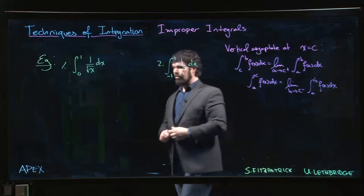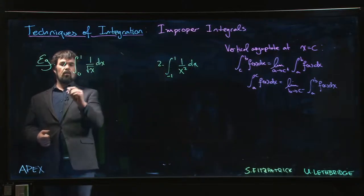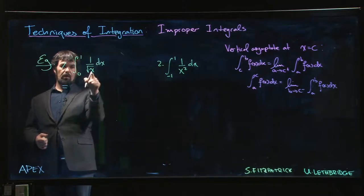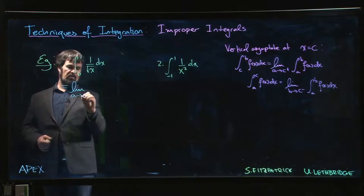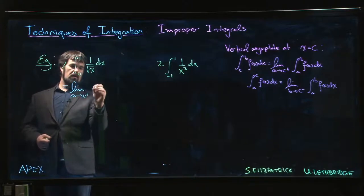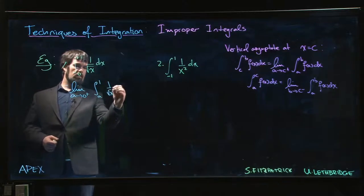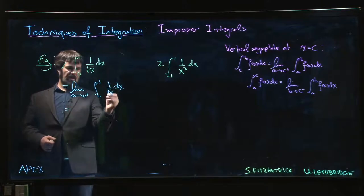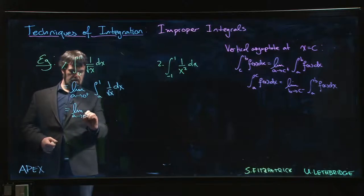For example, in this first one here, we should take this and we should rewrite this. Of course there's a vertical asymptote at zero, so we write it as the limit a going to zero from the right, integral from a to one, one over root x times dx.